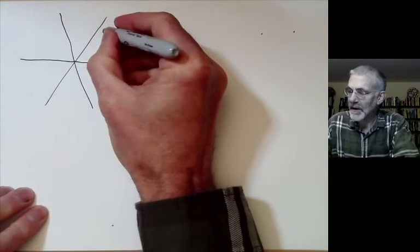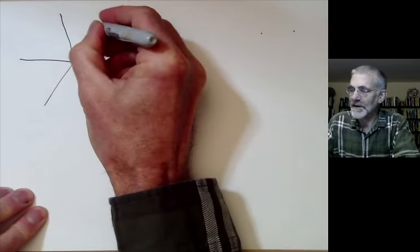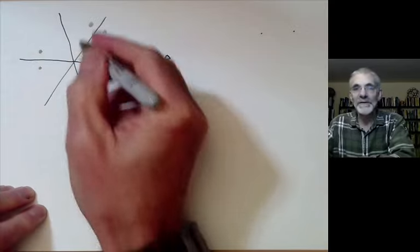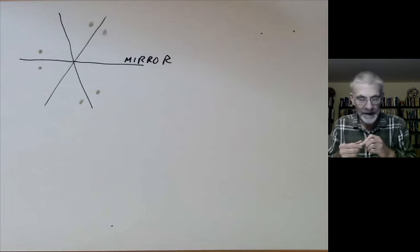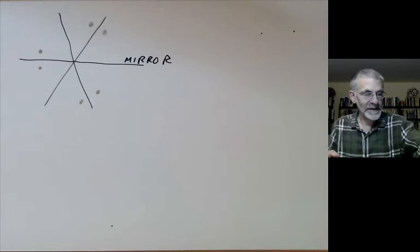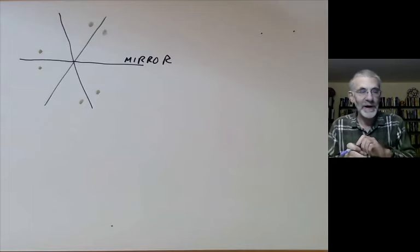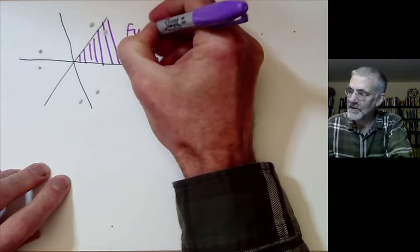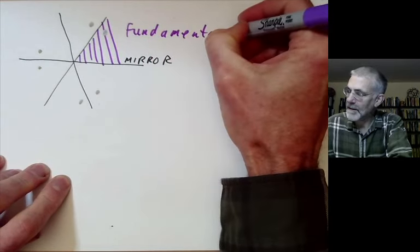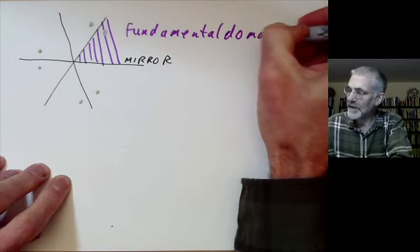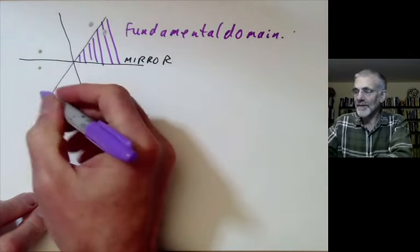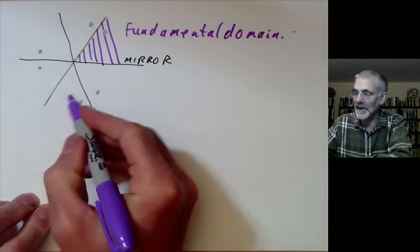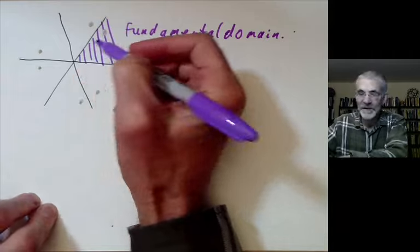If you take a point and reflect it in these mirrors, you get another point, and then reflecting further you get points here and here and here — a sort of kaleidoscope effect. This reflection group can be described using a fundamental domain, which means every point in the plane is congruent under some series of reflections to a unique point in this fundamental domain.